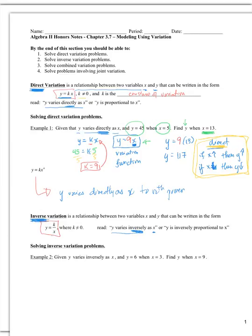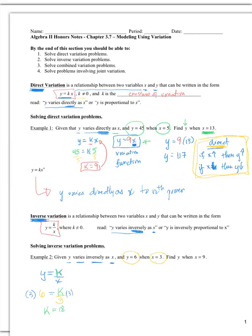Given 'y varies inversely as x,' we put x in the denominator because we're inverting the placement of x. Here is your inverse variation equation, and we need to find k. Substituting in the given values, y is 6 and x is 3. To solve for k, we multiply both sides by 3 and get that the constant of variation k equals 18.